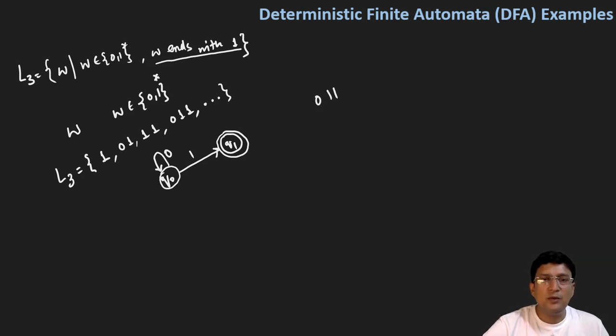For a string like 011, from q0 state, on getting zero we stay at q0, on one we move to q1, and on one again at q1 we stay at q1. Then if we're at q1 state, on getting one, q1 to q1 transition.